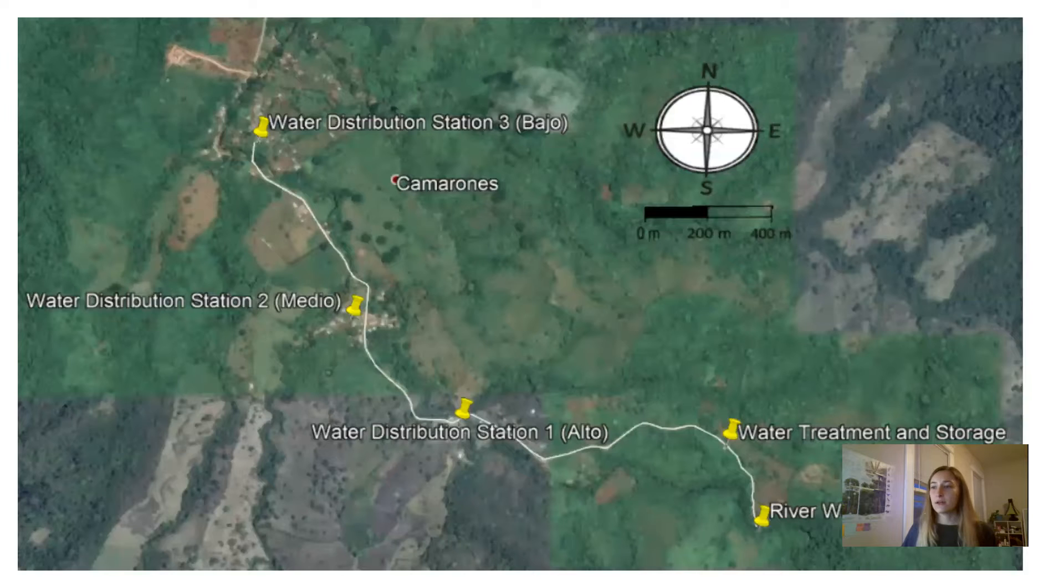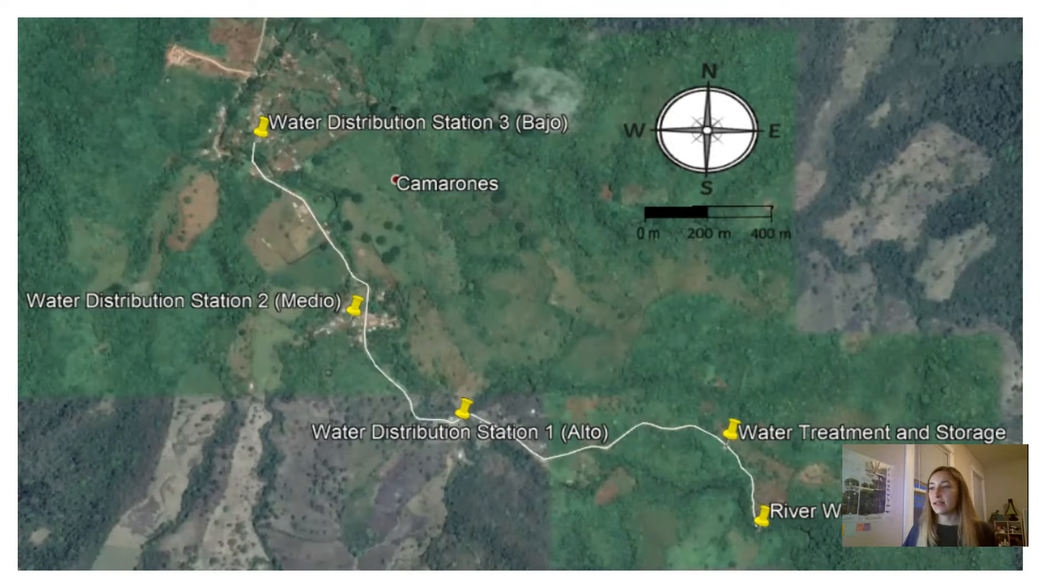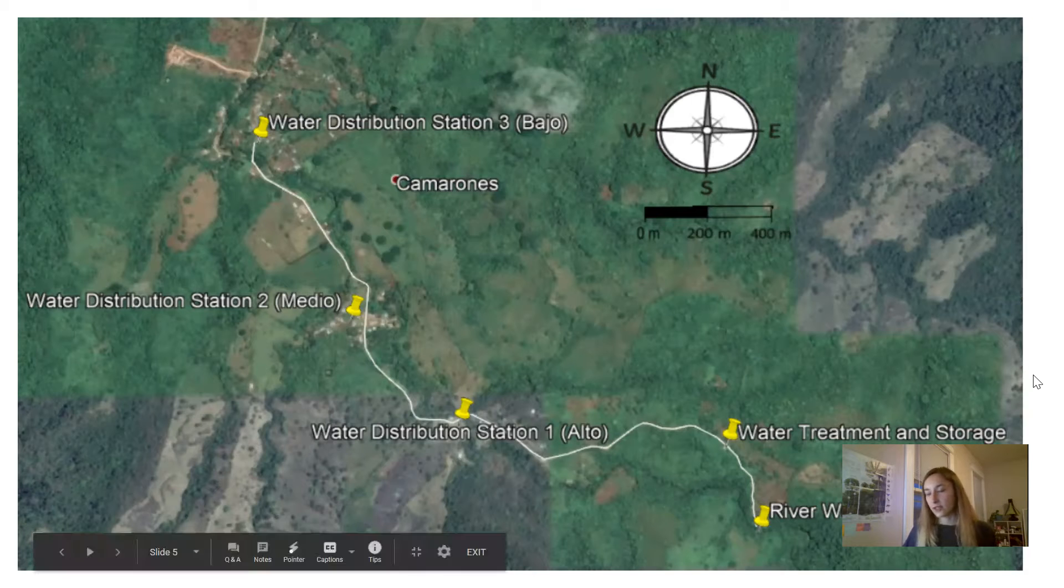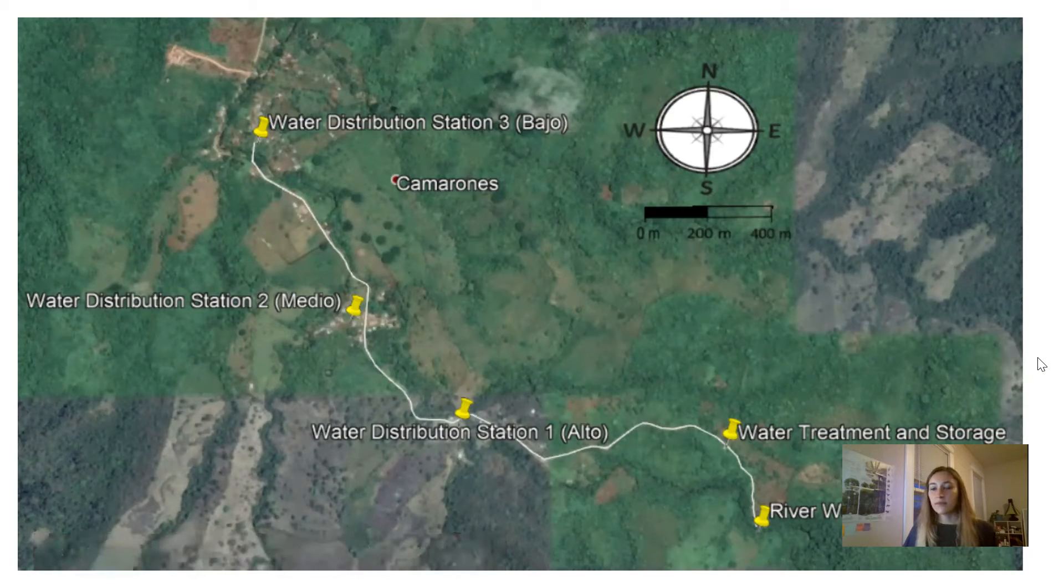Something important to note about this community is that it is subdivided into three main neighborhoods: Bajo, Medio, and Alto, which have significant geographical distances between each. A couple other points of interest in this map include the water treatment and storage location and the river well. The river well is located at an altitude somewhere in between that treatment and storage area and Alto. The treatment and storage area is the highest elevation point that we will be looking at today for reference.